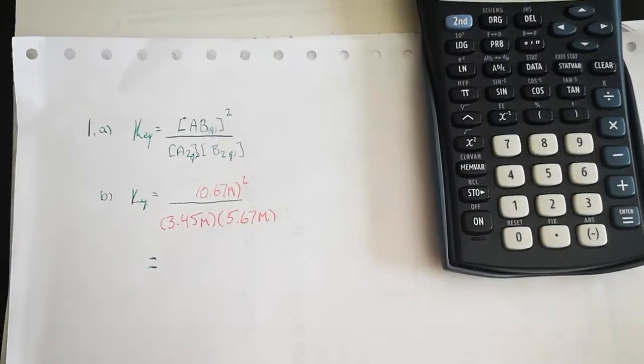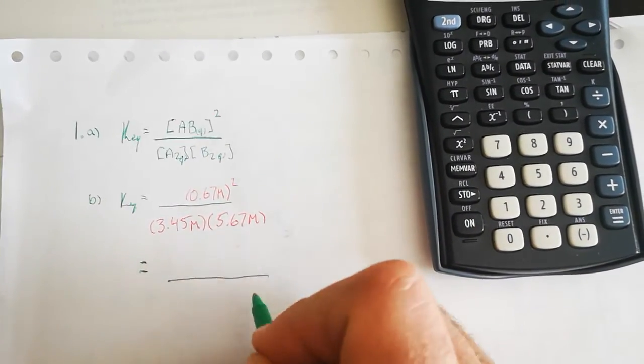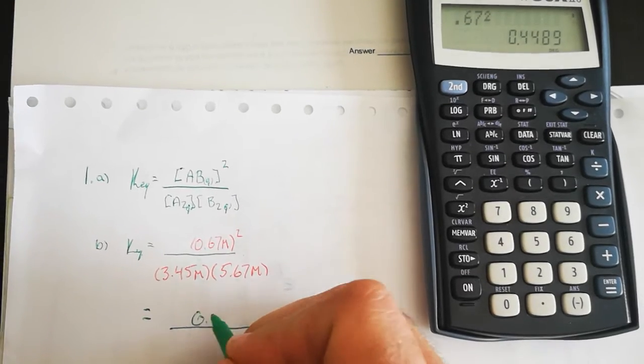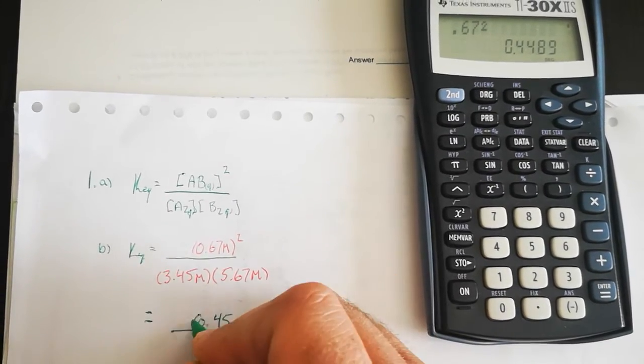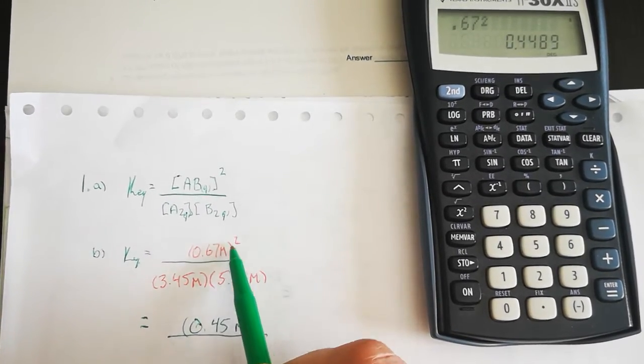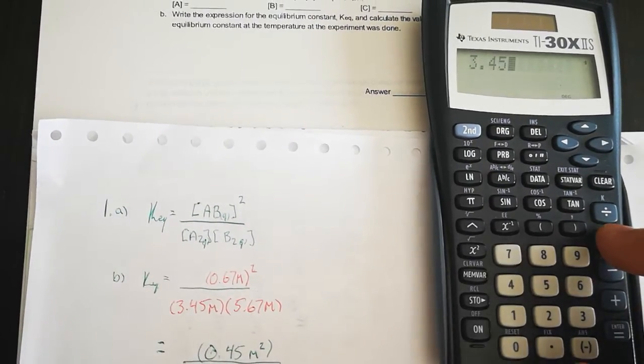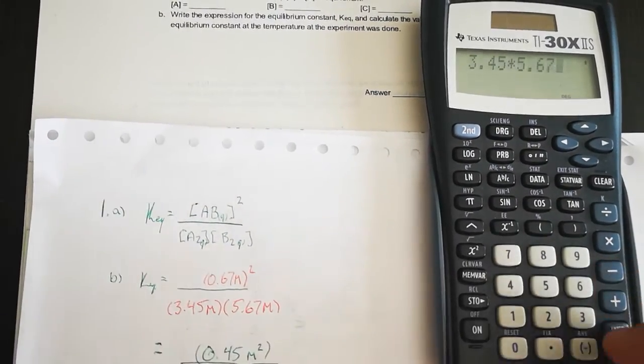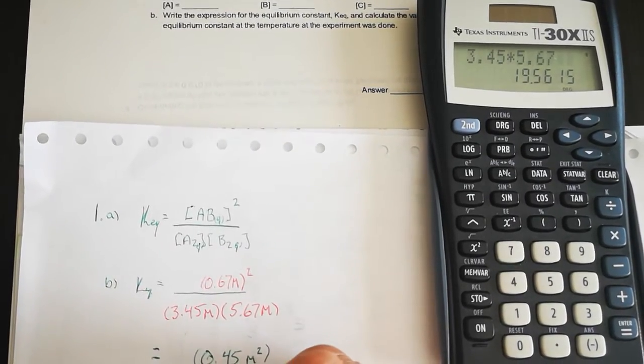So 0.67 squared, if we simplify that on the numerator, gives us 0.45 molarity squared. When we square the number, we're also squaring the unit. And when we multiply the denominator, that's 3.45 times 5.67, we get 19.5615.